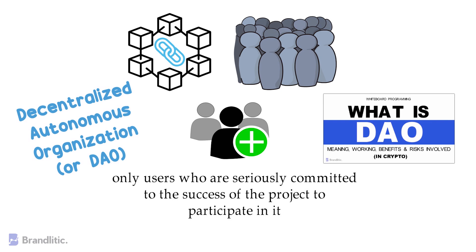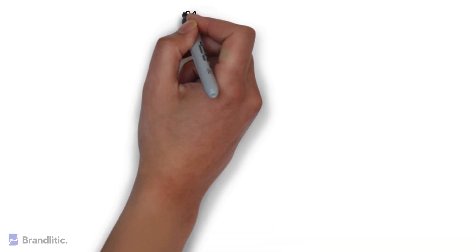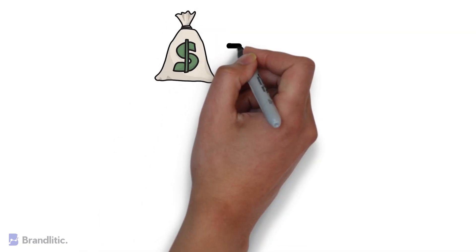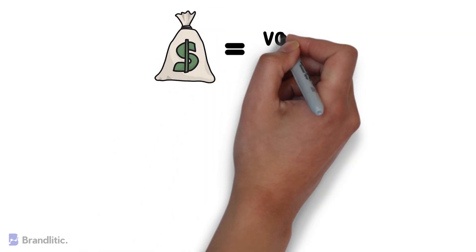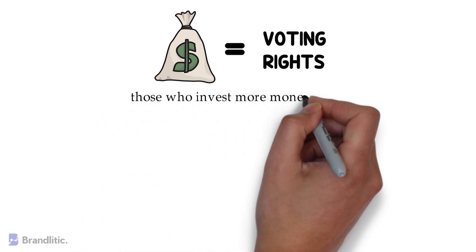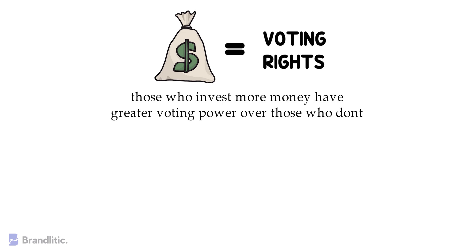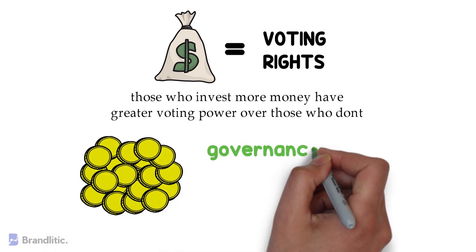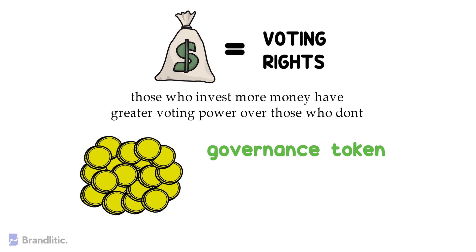Moving on, these DAOs require participants to invest their own money in exchange for voting powers to ensure they all act honestly and the DAO prevails. Usually, under this setup, those who invest more money have greater voting power over those who don't. A type of utility token known as a governance token is then issued to users to represent each person's stake in the DAO.